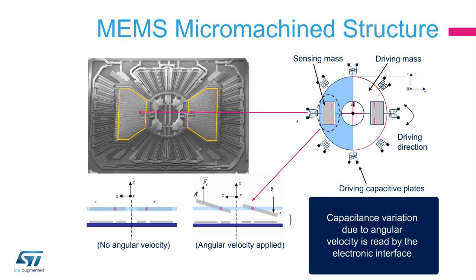Here we have a detailed view of the MEMS structure of a single-axis gyroscope. In the photo, we see the mechanical mass with its two wings highlighted in yellow. The wings move up and down when an angular rate is applied. Capacitive plates surround the structure and are used to actuate the mass. The diagram on the right shows a representation of this structure along with the capacitive plates that are used to create the motion.